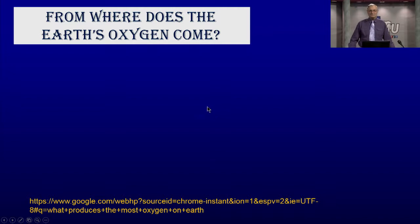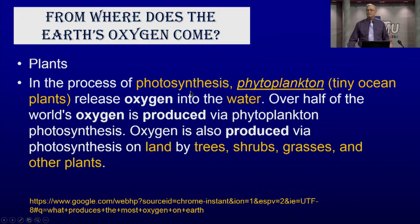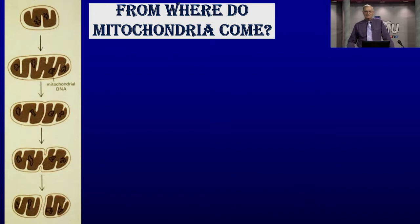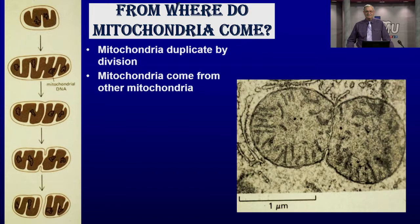Where does oxygen come from? Oxygen comes from photosynthesis — what plants do. Photoplankton in the ocean make about half the oxygen; the other half comes from trees, shrubs, grass, and other plants. That's why we want to save trees and plants: they use up the carbon dioxide we want to get rid of and make the oxygen we need. Mitochondria themselves divide — it takes one to make one. The mitochondria you have all came from your mom.